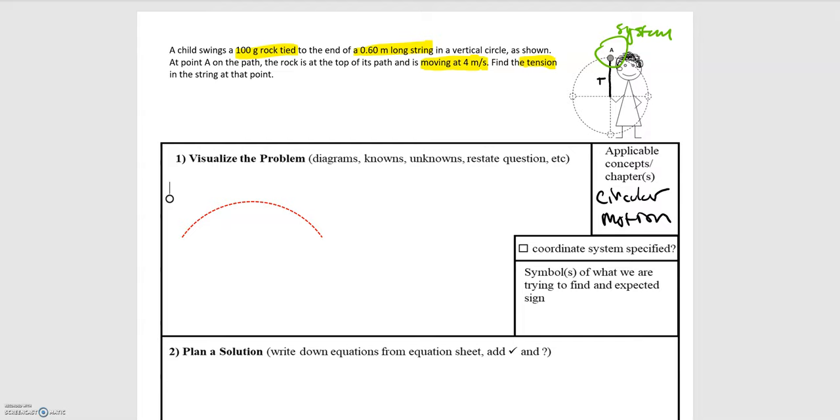Now that we defined our system, we can come down here to the first problem-solving step and let's start by drawing our coordinate system. Since it's circular motion, we want to deal with the radial direction, or the centripetal direction, and then the direction tangent to that, which will be the direction of the velocity of the object. This is going to be point A here at the top of the arc.